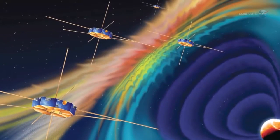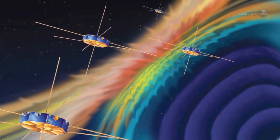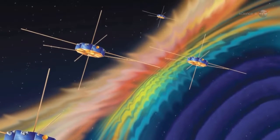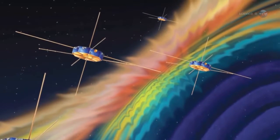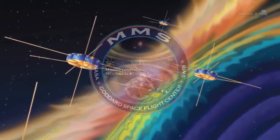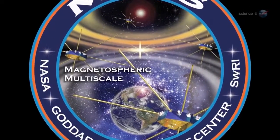This means that a single member of the MMS constellation, using the diagnostics, can find a portal and alert other members of the constellation. Mission planners long thought that MMS might have to spend a year or so learning to find portals before it could study them. Scudder's work shortcuts the process, allowing MMS to get to work without delay.